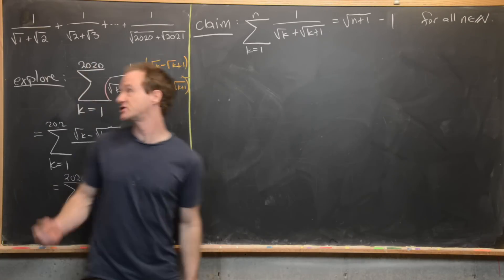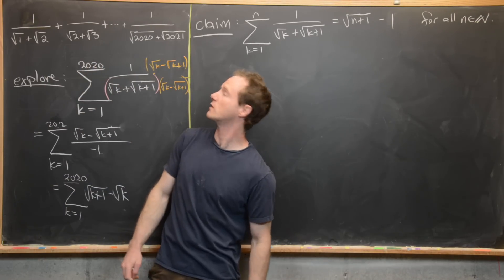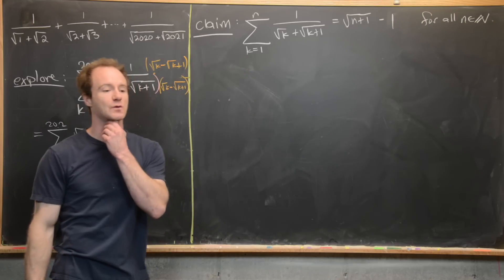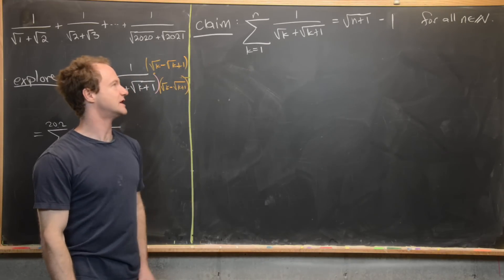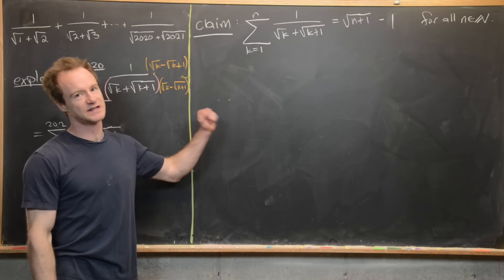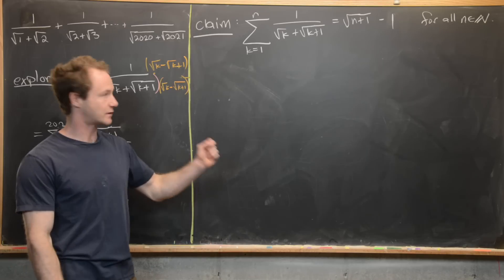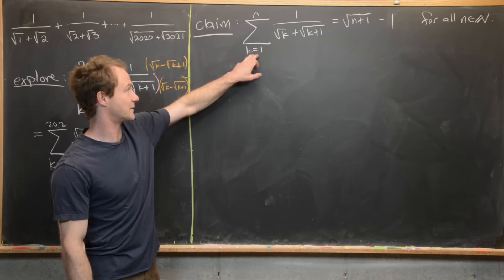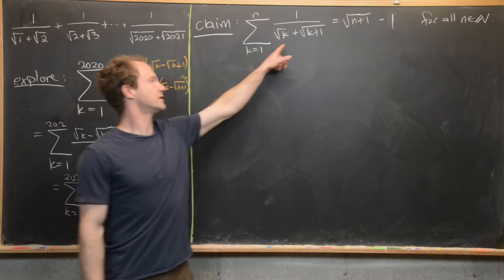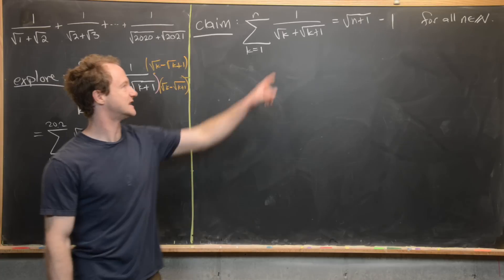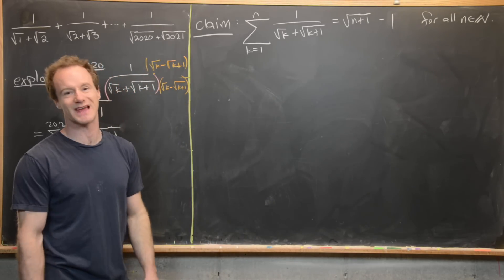We want to prove that the sum from k=1 to n of 1/(√k + √(k+1)) equals √(n+1) - 1, and that this is true for all natural numbers n.